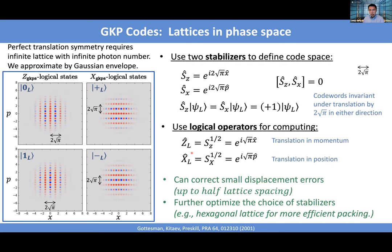Interpreting the stabilizers as simultaneously measuring position and momentum modulo √π allows correction of small displacement errors up to half the lattice spacing. Furthermore, the lattice doesn't have to be square — it can be hexagonal — and you can encode information with that as well.